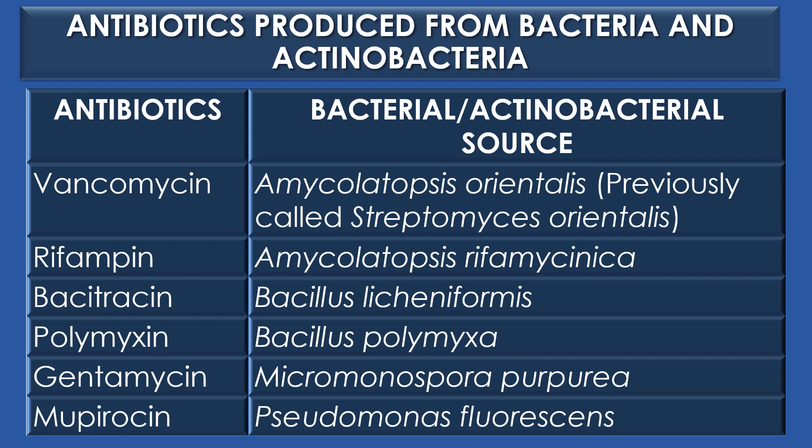The antibiotic vancomycin was produced from Amycolatopsis orientalis, previously called Streptomyces orientalis. Rifampin was produced from Amycolatopsis rifamycinica. Bacitracin was produced from Bacillus licheniformis. Polymyxin was produced from Bacillus polymyxa. And gentamicin was produced from the actinobacteria Micromonospora purpurea.